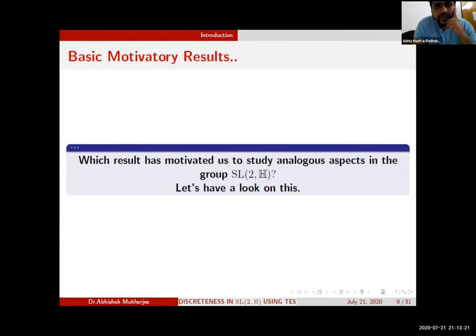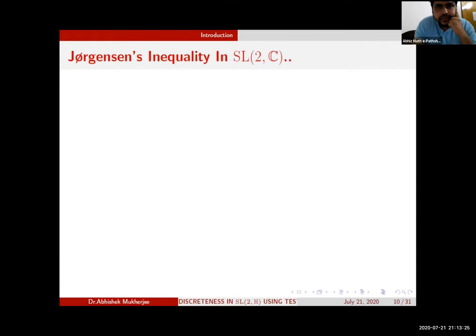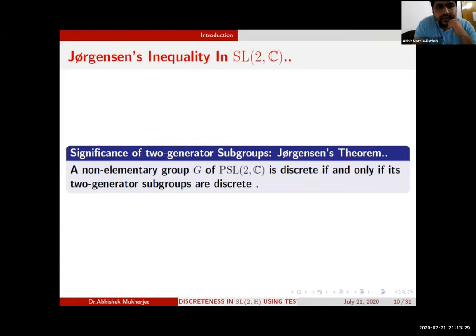The motivating result in this work was by Jørgensen: a non-elementary group of PSL(2,C) is discrete if and only if its two-generator subgroups are discrete. That means the discreteness of subgroups in PSL(2,C) is determined by the discreteness of the two-generator subgroups.